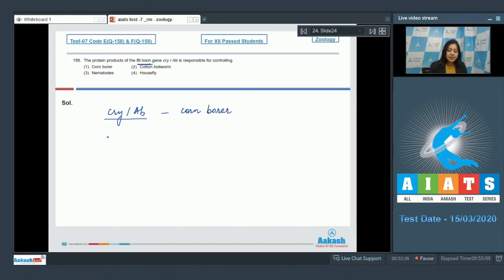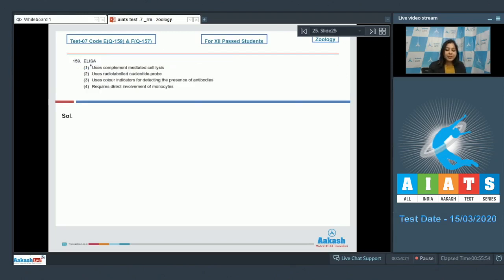Here students, cry 1 AB codes for proteins which protect the plant from corn borer, whereas proteins coded by genes cry 1 AC and cry 2 AB protect the plant from cotton boll worm. So the correct answer becomes option number one.